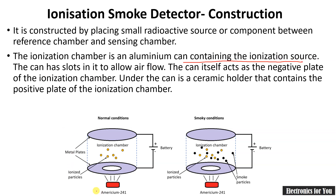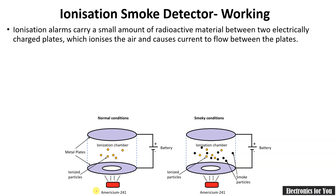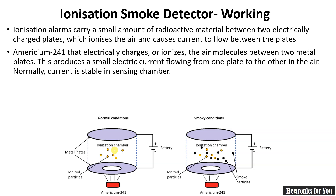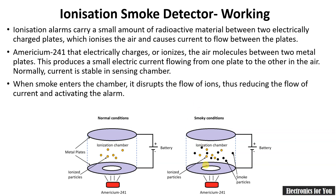A material known as Americium-241 is placed between the ionization chamber plates. In normal conditions, this ionizes the particles between the two plates, so a small amount of current flows between them. When a smoky condition is detected — shown as black dots representing smoke particles — the current between the two plates decreases. This change is sensed by the sensor, and the variation in current is used to detect smoke particles, thus activating the alarm.